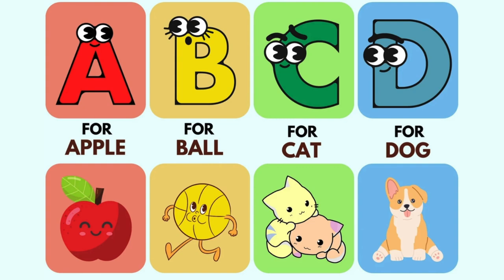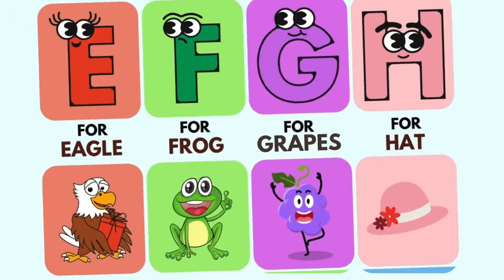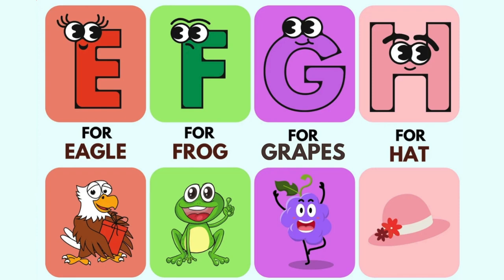A is for apple, B is for bone, C is for cat, D is for dog, E is for eagle.